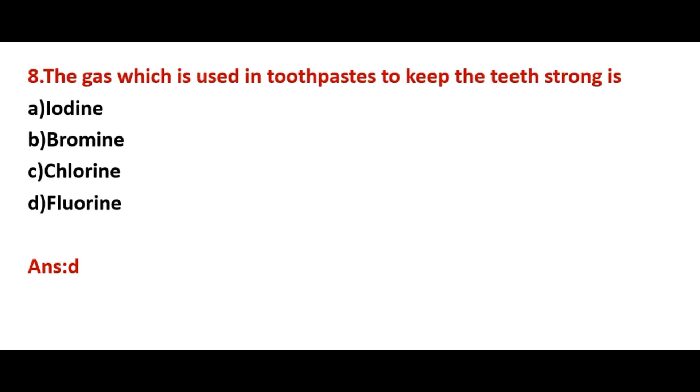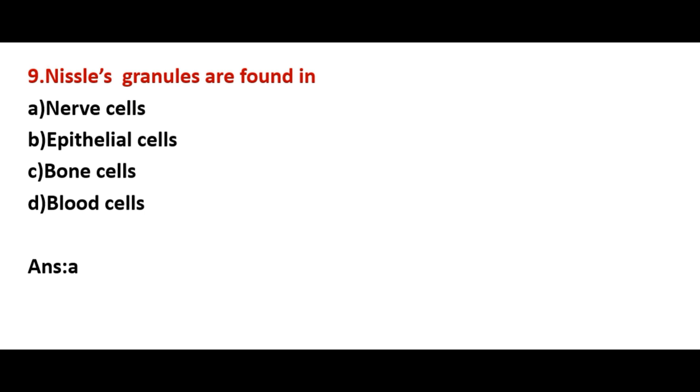Next one: The gas which is used in toothpaste to keep the teeth strong is? Answer is D, fluorine. Next one: Nissl's granules are found in? Answer is A, nerve cell.